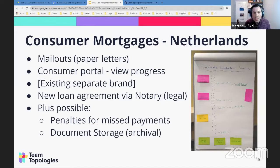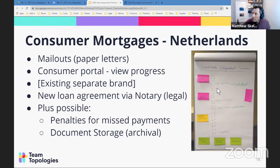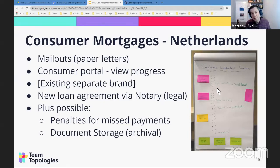Going back to the consumer mortgages in the Netherlands example — you can see on the photograph on the right-hand side there are ticks next to numbers one through seven. That's me at the whiteboard ticking off when we think we've got a positive answer to each of those seven items. For the three services we identified, most of those seven questions had a tick against them, so we were pretty confident those were good candidates for separate services.